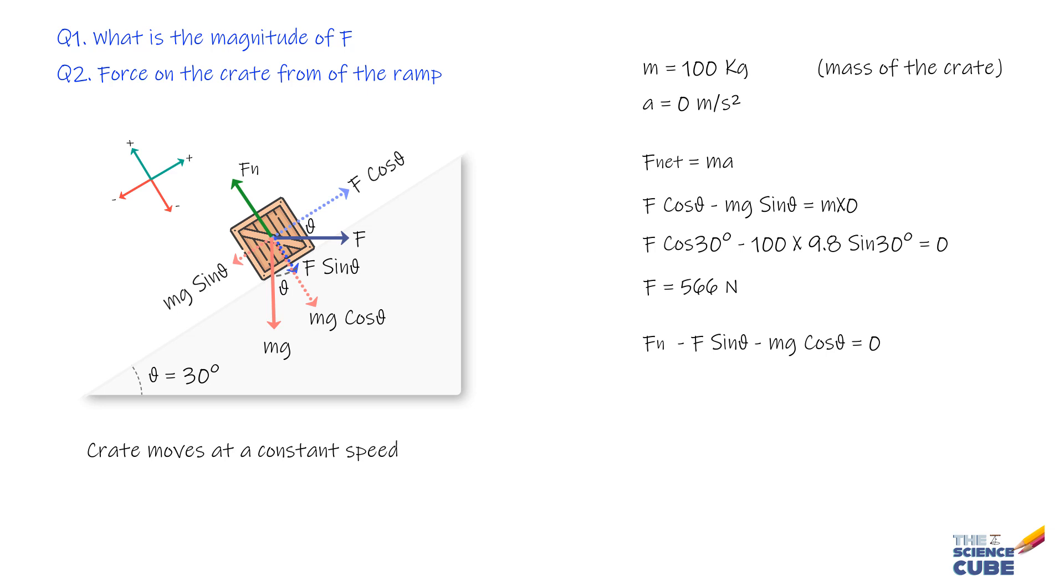Fn is positive as it acts in the positive y direction, and the other two forces are negative as they act in the negative y direction. Substituting values: Fn minus 566 times sin 30 minus 100 times 9.8 times cos 30 equals 0, or Fn equals 100 times 9.8 times cos 30 plus 566 times sin 30, giving us Fn equals 1133 newtons.